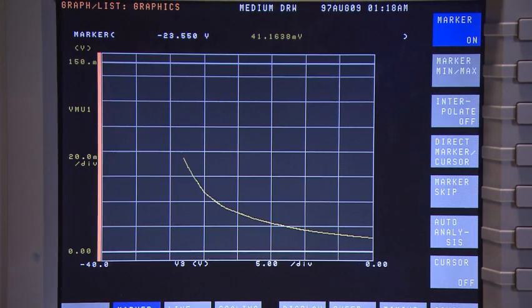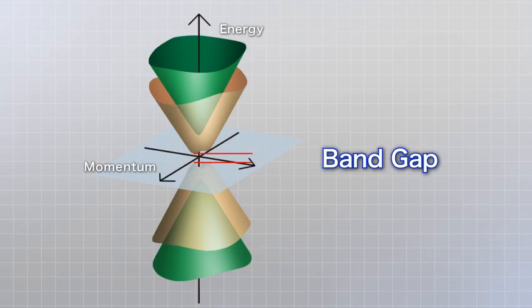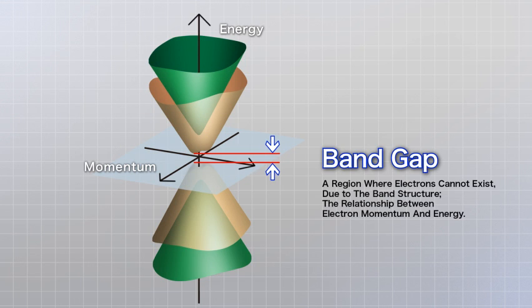We have also confirmed that there is a band gap in bilayer graphene. In other words, a region where electrons cannot exist. This characteristic can be applied in transistors that use an electrical field to control electrical currents.